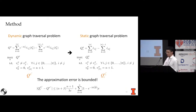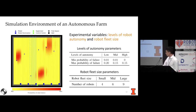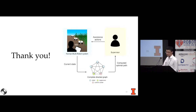Under certain assumptions, we developed a bound on the approximation error as a function of system parameters such as number of robots and field size. We demonstrate effectiveness in a simulated autonomous farm environment with varying levels of robot autonomy and fleet sizes. Compared against multiple baselines, the Profitable Tour Problem approach achieves the fastest task completion time under all autonomy levels and fleet sizes. Although our method achieves less progress early in the task compared to greedy approaches, it generates superior global performance due to long-term planning.